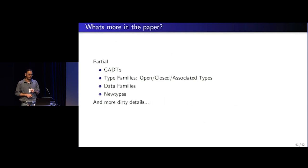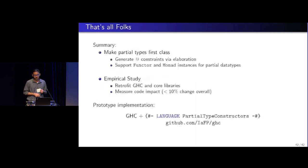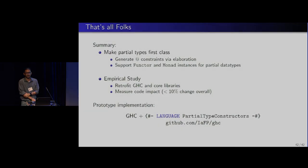So in the paper, we talk about partial GADTs, type families, data families, new types, because all of this now needs to be accounted for when we have explicit partiality in the type system, and there are certain dirty details of the implementation. So this concludes my talk. We have, I mean, this is not just theory. This is Haskell Symposium. So all of this is available on the web. You're encouraged to play around and let me know how it works. And I'm ready to take questions, I guess. Thank you.